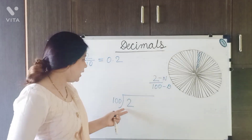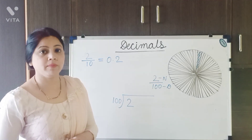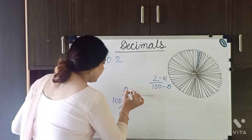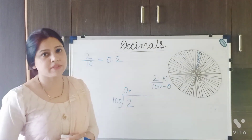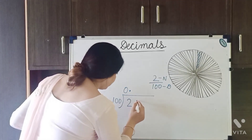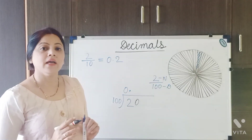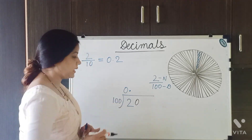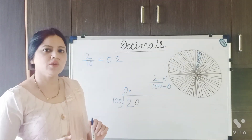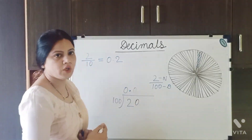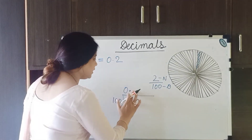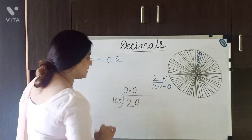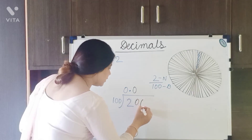Is it possible to divide 2 by 100? No, it is not possible. So, as we saw before, first we have to give 0 and a decimal point, then we can add a 0 to the dividend making it 20. Can we divide 20 by 100? Again, this is not possible. So we add another 0 to the quotient — but since we already gave the decimal point once, we only need to add 0, not a point again. Adding 0 to the dividend makes it 200.